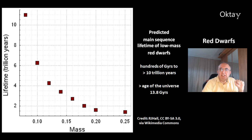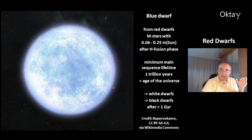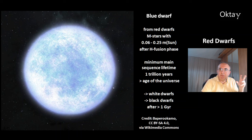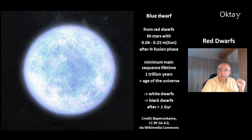Low-mass red dwarfs with a mass of 6 to 25% of the sun will become blue dwarfs after they run out of hydrogen. The main sequence lifetime is at least one trillion years — much greater than the age of the universe — so no blue dwarf has yet formed. Eventually, all red dwarfs will become white dwarfs. White dwarfs typically have the size of the Earth, and it takes more than one billion years for them to cool down to black dwarfs.